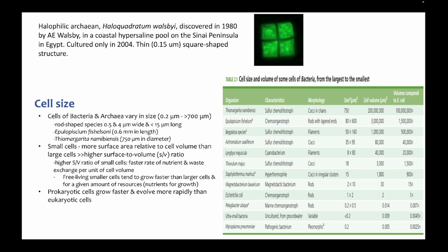You have bacilli (rods), and you also have curved forms — Vibrio is curved like a comma shape. Caulobacter is one example of appendaged bacteria, known as stalked bacteria. We also have square bacteria, which is actually an archaeon — a halophilic archaea, where 'halo' means salt-loving. This organism lives in a hypersaline pool where the salt concentration is very high. Although it was discovered in 1980 through microscopy, it was only able to be cultured in 2004.